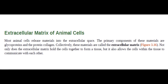Most animal cells release materials into the extracellular space. The primary components of these materials are glycoproteins and the protein collagen. Collectively, these materials are called the extracellular matrix. Not only does the extracellular matrix hold the cells together to form a tissue, but it also allows the cells within the tissue to communicate with each other.